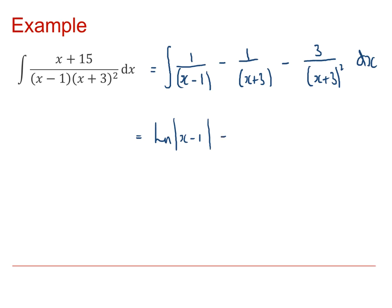The second one again, so we've got minus natural log x plus 3. But the third one is not a natural logarithm. So this is just a power minus 2.